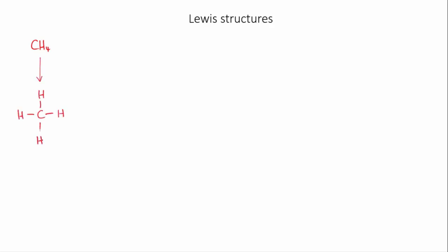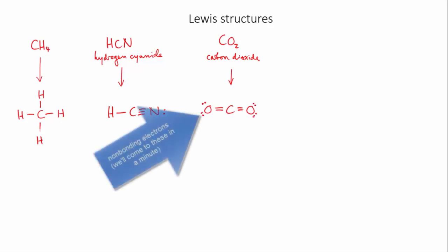Here are some examples of Lewis structures for some covalent molecules. You can see that they show how the atoms are attached to each other, where there are single, double and triple bonds, and where the non-bonding electrons are.